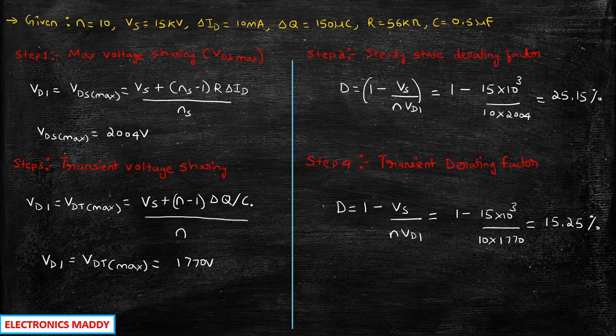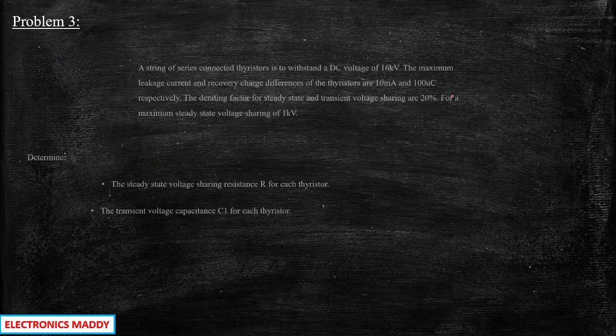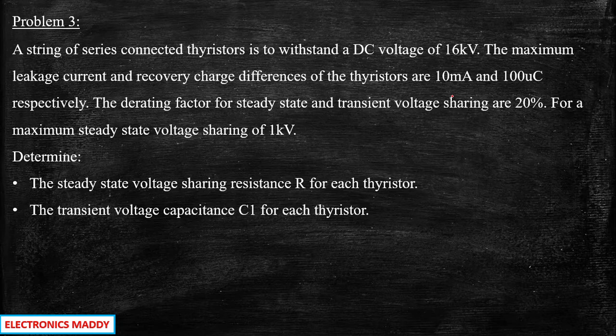So these are the parameters asked in problem 2 and we have found all of them. Now let us look at problem number 3. They have given a string of series connected SCRs to withstand a DC voltage of 16 kV. The maximum leakage current and recovery charge differences of the thyristors are 10 mA and 100 µC respectively. The derating factor for steady state and transient voltage sharing is 20%, and maximum steady state voltage sharing Vd1 equals 1 kV. We need to find R and C.